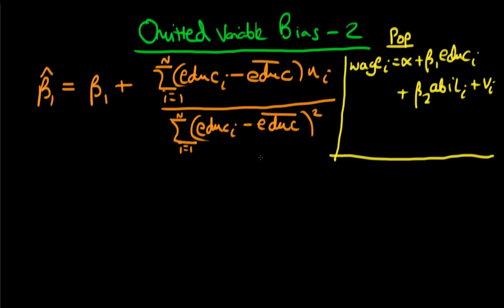Hi there, welcome back. In this video I'm going to actually prove or derive the omitted variable bias, which comes about from omitting an important variable in your model that is correlated with one of the independent variables.